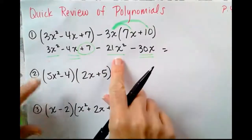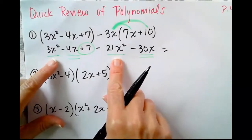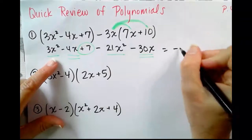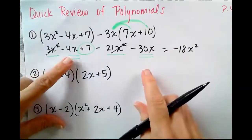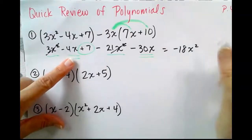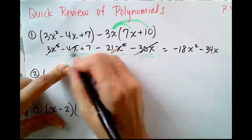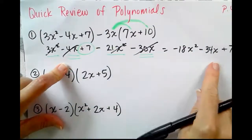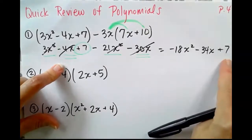The x squares come first because our exponents are going to descend. A positive 3 and a negative 21 is negative 18x squared. Mark them off. A negative 4 and a negative 30 is negative 34x. And then finally, plus 7.